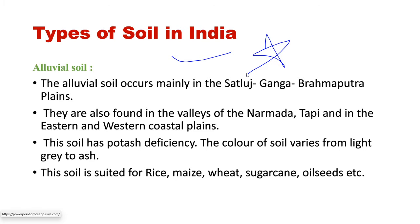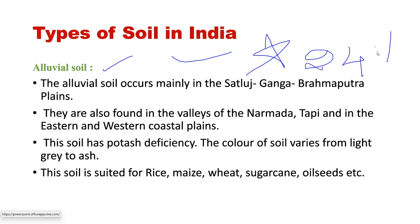So first, Alluvial Soil. This alluvial soil is the most fertile soil in India. It covers about 24% of the land surface of India. It is mostly found in the Indo-Ganga-Brahmaputra plains.